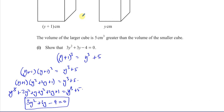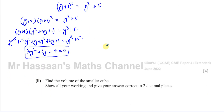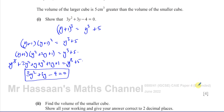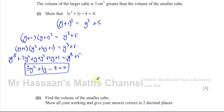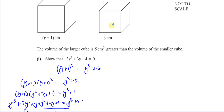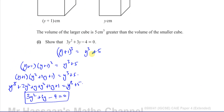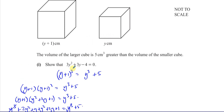For part 2, find the volume of the smaller cube, show all working, and give your answer correct to 2 decimal places. Even if you couldn't show part 1, they already gave you the equation. So even if those 4 marks are gone, you can still find Y by solving the equation they provided, then find the volume. You don't have to do part 1 to answer part 2 — you can salvage those marks.